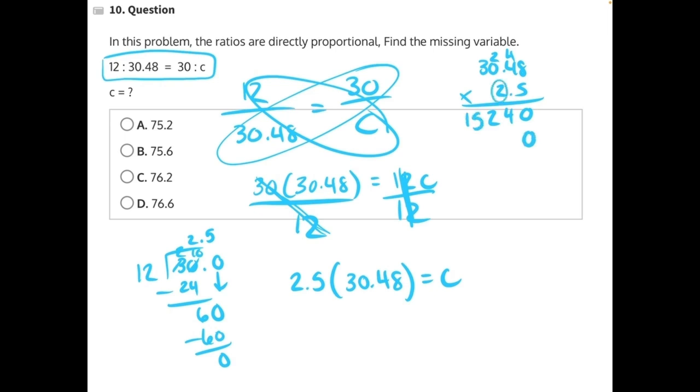2 times 8 is 16, carry the 1. 2 times 4 is 8, plus 1 is 9. 2 times 0 is 0, plus nothing because this was from the old math, is 0. 2 times 3 is 6.